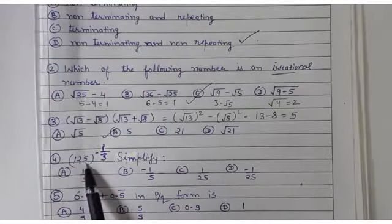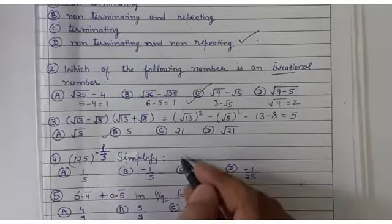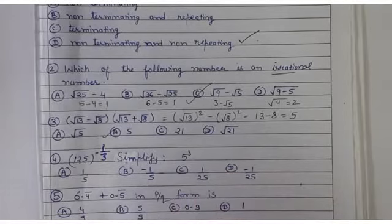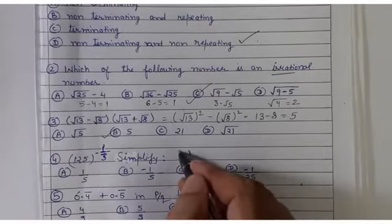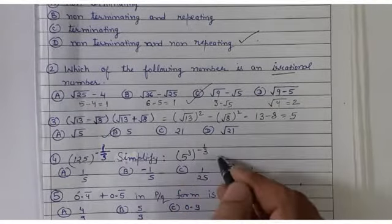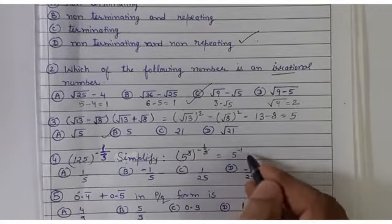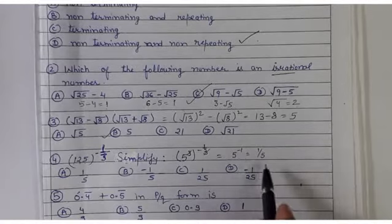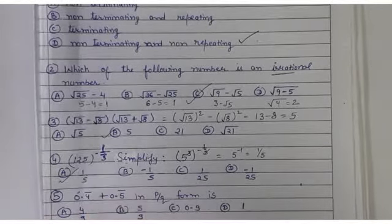Question number 4: 125 to the power minus 1/3. I can write 125 as 5 cubed: 5 times 5 is 25, and 25 times 5 is 125. So (5³)^(1/3) gives 5^1, and 5^(−1) is 1/5. The answer is A.